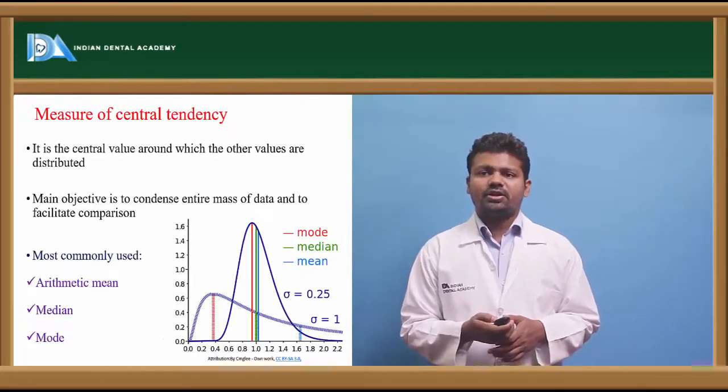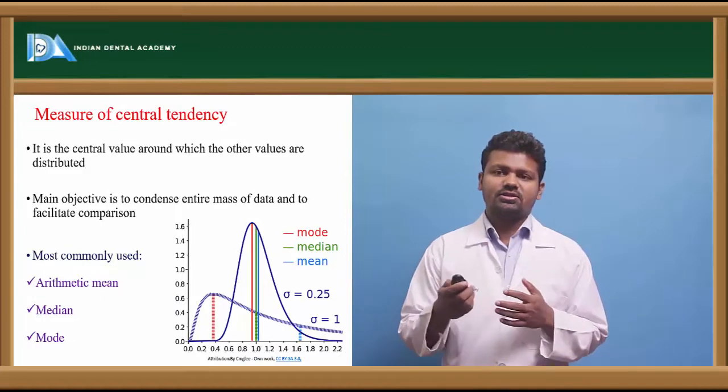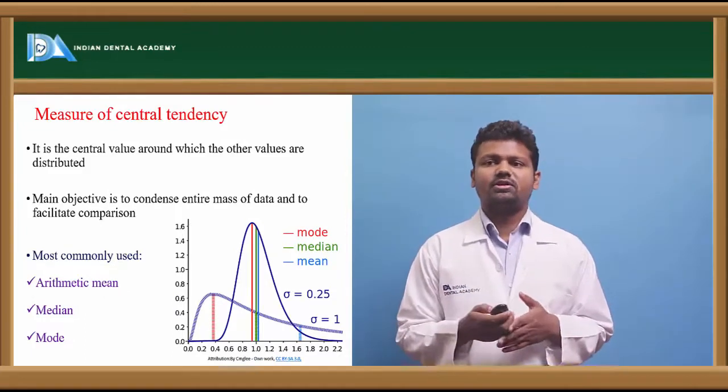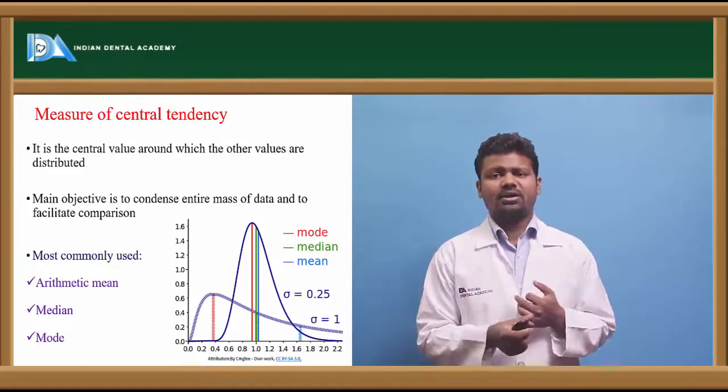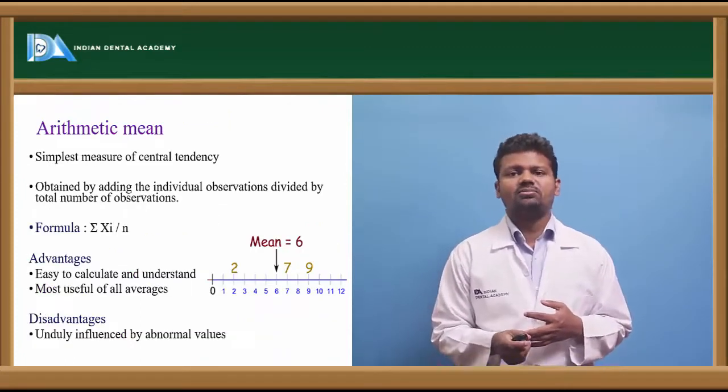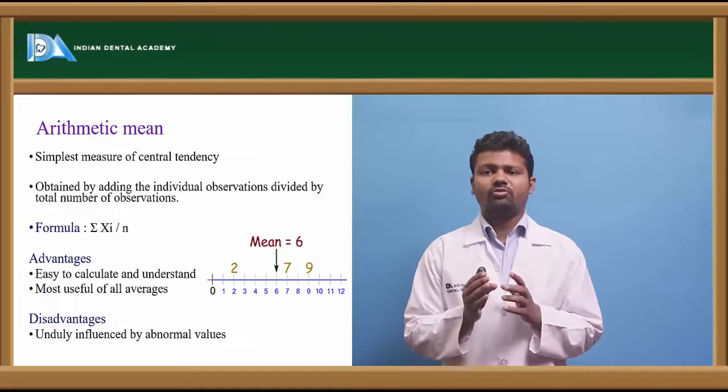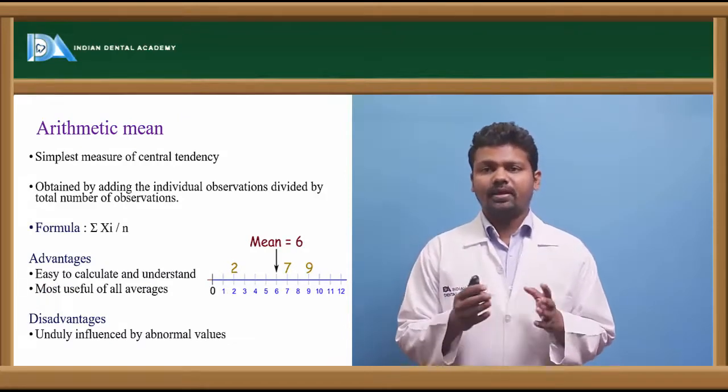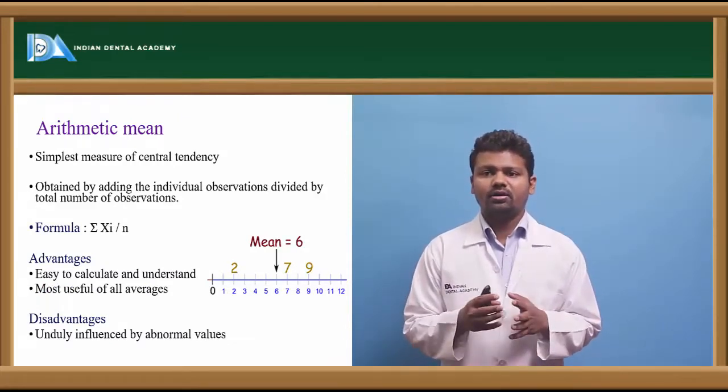Measures of central tendency include the central value around which other values are distributed: arithmetic mean, median, and mode. The arithmetic mean represents the middle value of any tendency.